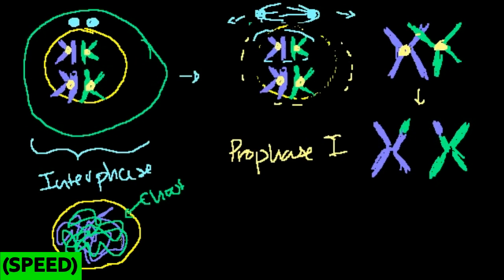So in prophase 1, you have crossing over occurring, the nuclear envelope starts to disassemble, all of the chromosomes align, and the chromatin starts forming into more tightly wound structures. That's really where a lot of the action takes place — analogous to what happens in prophase in mitosis. Once that happens, we're ready to enter metaphase 1.